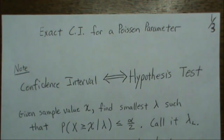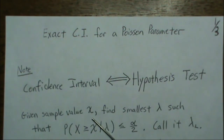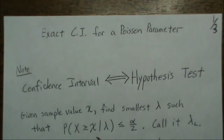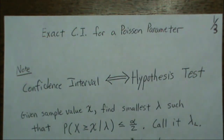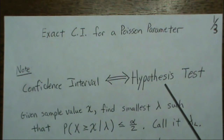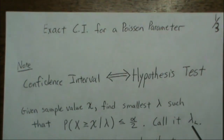Given a sample value, call it little x, we want to find the smallest lambda such that the probability of being greater than this sample value is less than or equal to alpha over 2. The lambda that makes this true we call lambda_L, and that's actually our critical region for the hypothesis test, which is also the lower endpoint of our confidence interval.